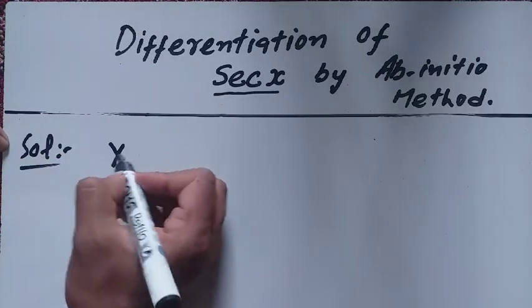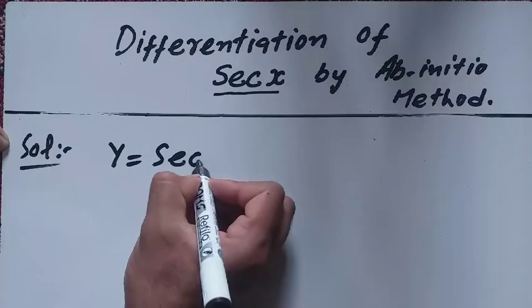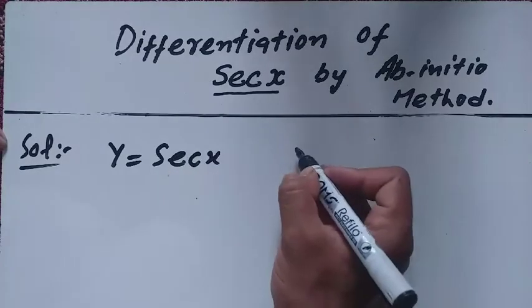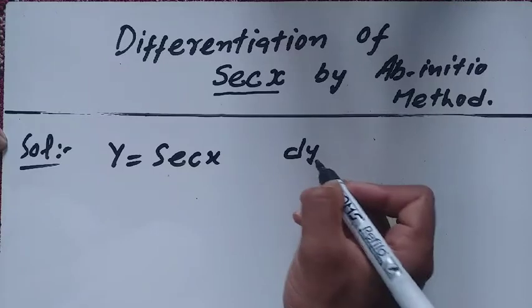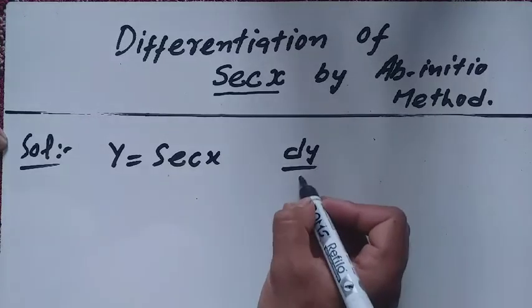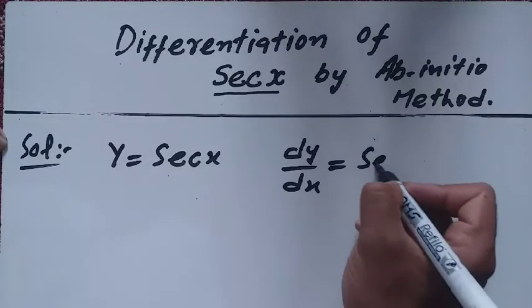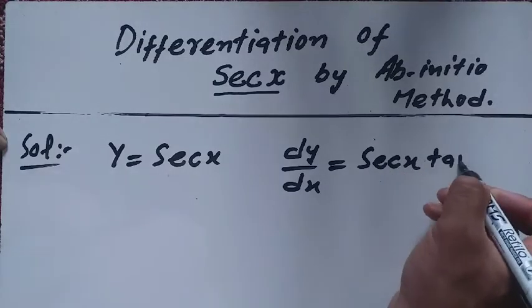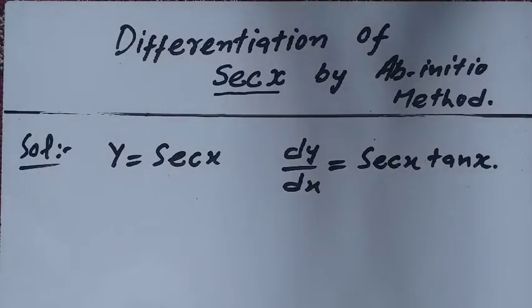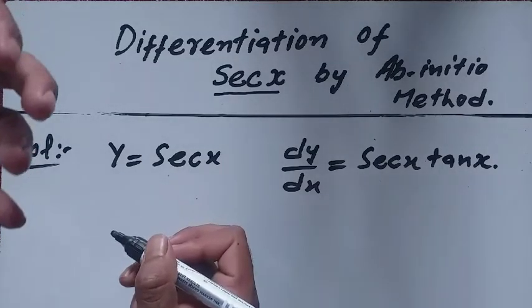Given we have a function y equal to sec x. As you know, the differentiation of sec x is dy by dx, which comes out to be sec x tan x. And we are going to prove this by the ab initio (first principles) method.